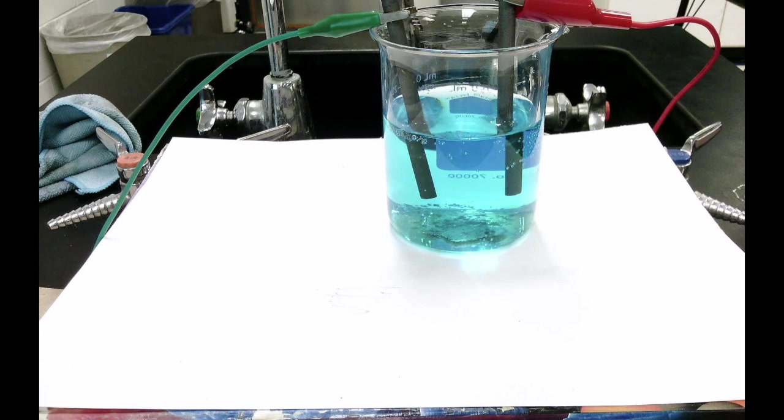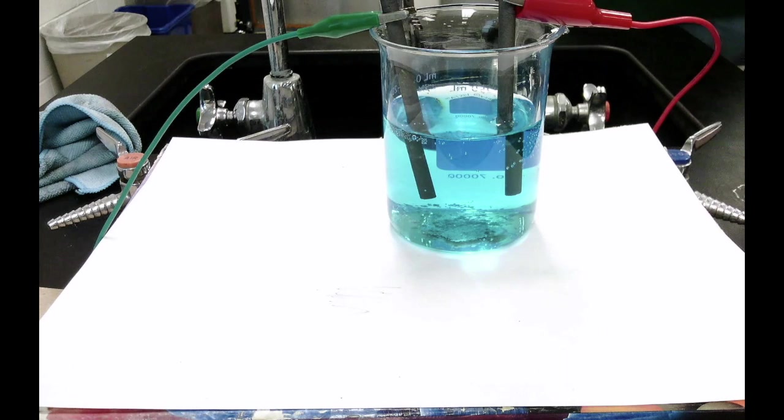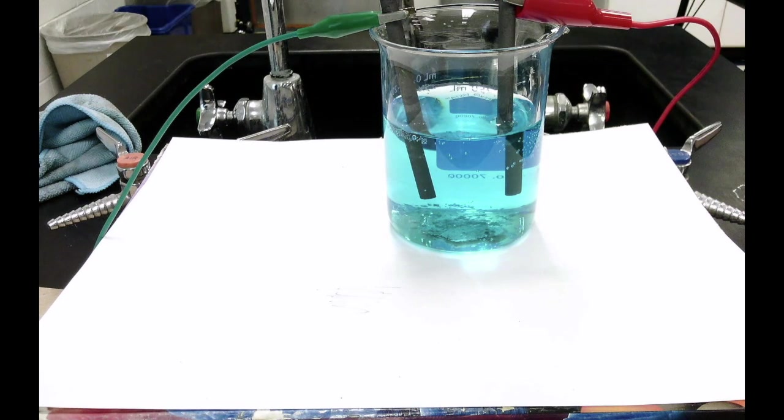The two black rods are graphite electrodes. Graphite is the same material that's found in pencil lead and it is a very good conductor of electricity.